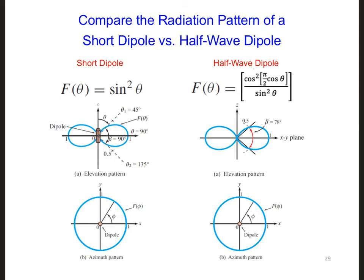Let's compare the radiation patterns of the short dipole versus the half-wave dipole. To plot the radiation patterns, we normalize the power density S of each antenna to get F, which is shown here.